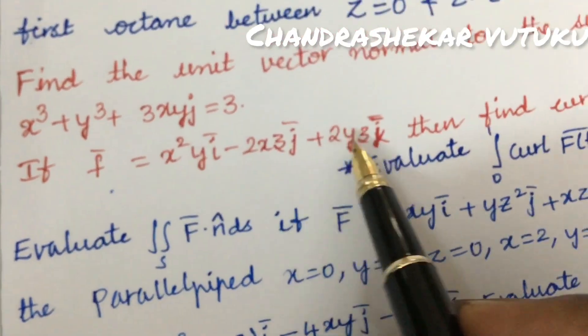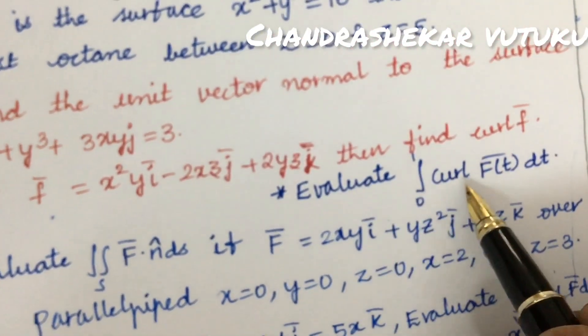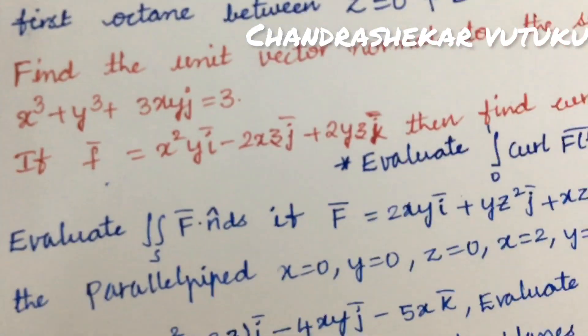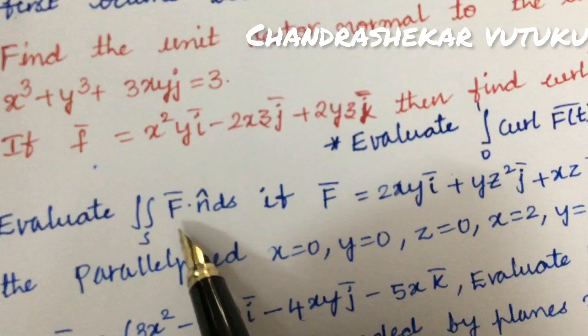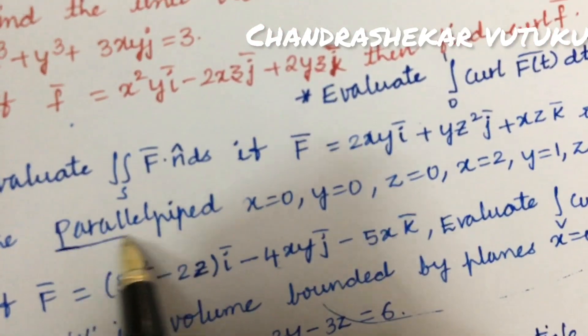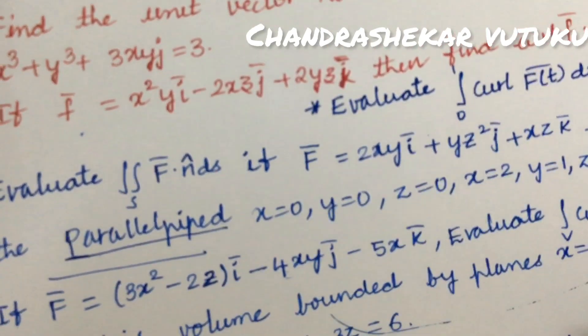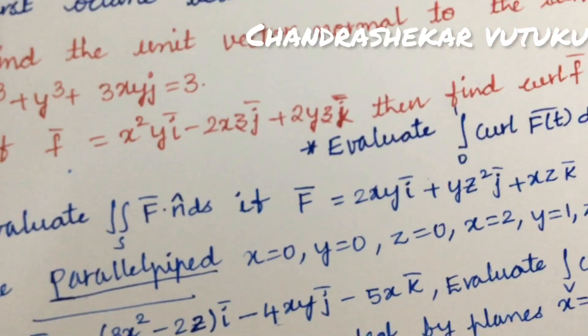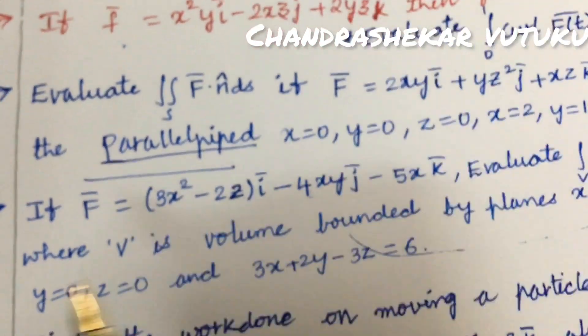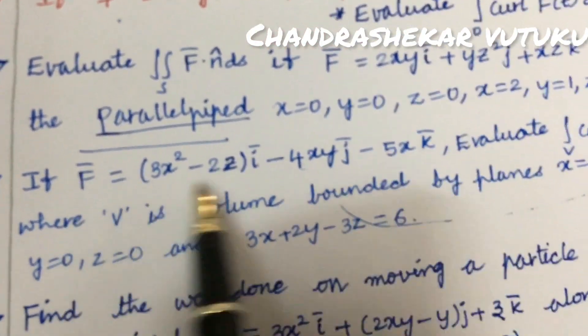Evaluate curl f, which is one of the top most important questions. Evaluate double integration of this relation over the parallelepiped. Do not expect a direct 15 mark question - it's about 7+8 combination or 10+5 split.